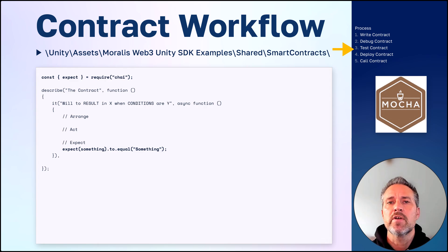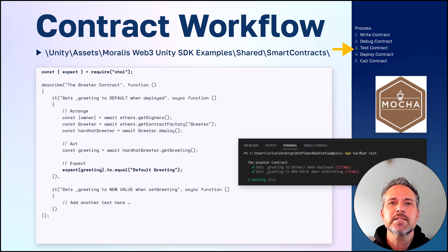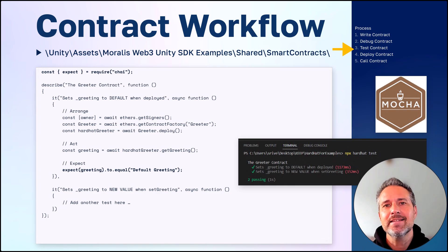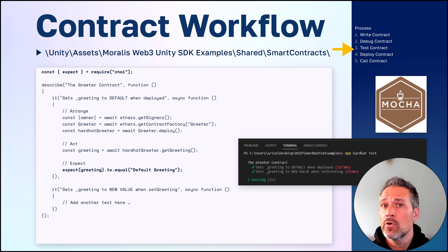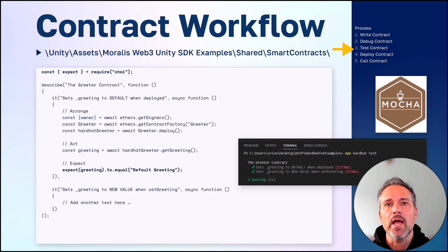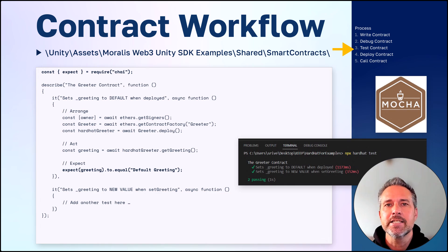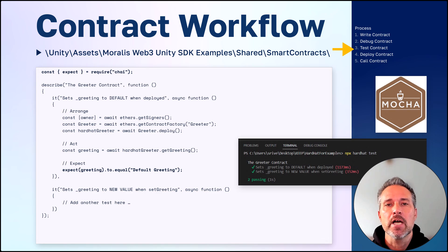Here we'll use the convention of arrange, act, and expect. If we want to test the get greeting and set greeting, we can use arrange to set it up, act to call the method, and then set the expected result. You'll see in the terminal, before you even go into Unity, that all these things pass in the expected way. The more code coverage and testing you do on your public Solidity methods here, the smoother the process will be from the Unity side.